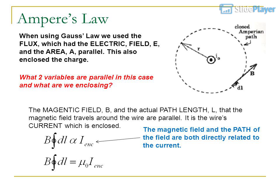What two variables are parallel in this case and what are we enclosing? The magnetic field B and the actual path length L that the magnetic field travels around the wire are parallel. It is the wire's current which is enclosed. The magnetic field and the path of the field are both directly related to the current.